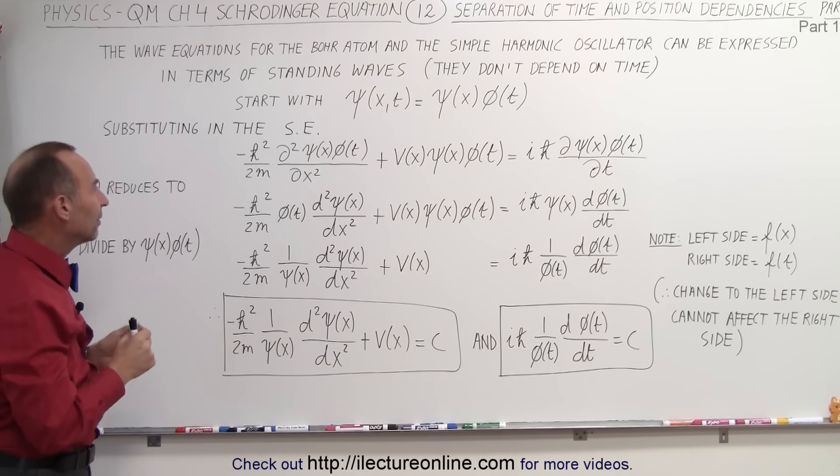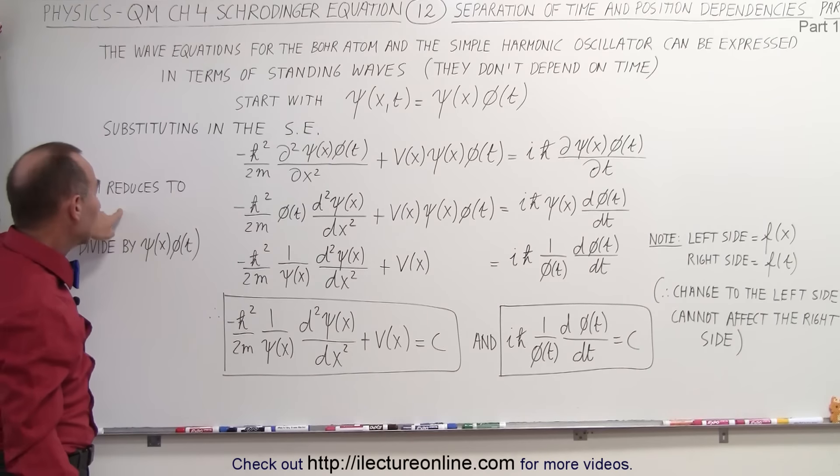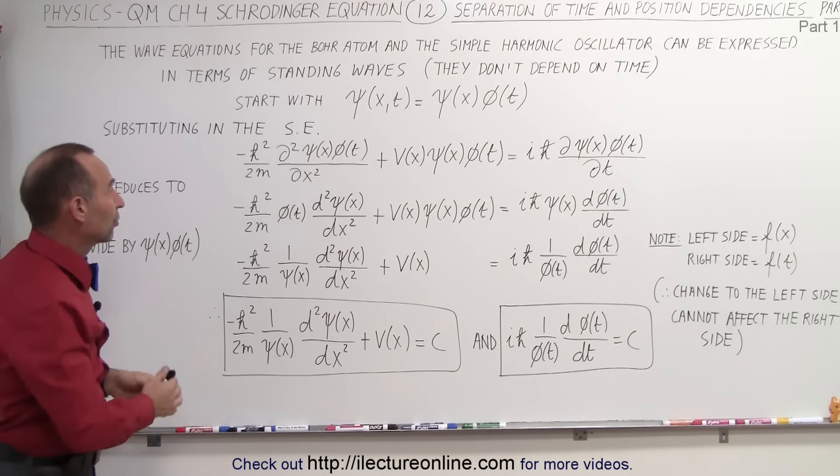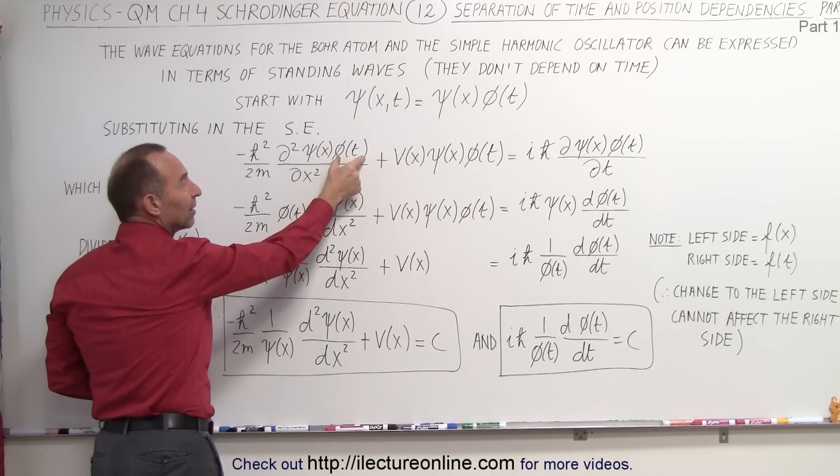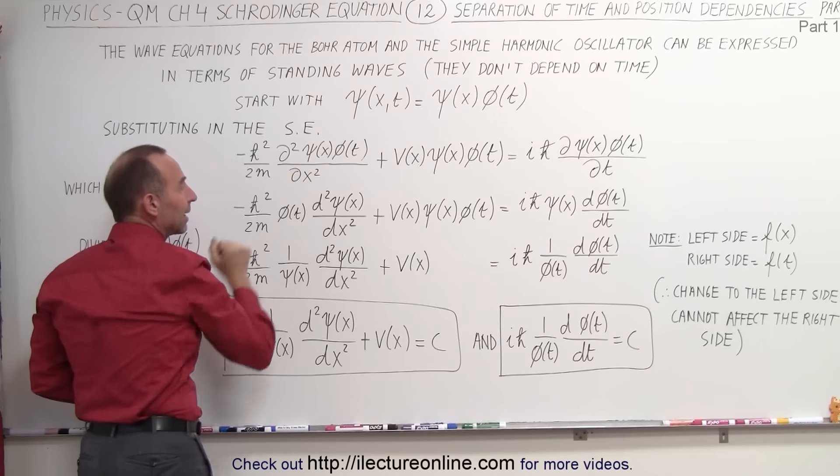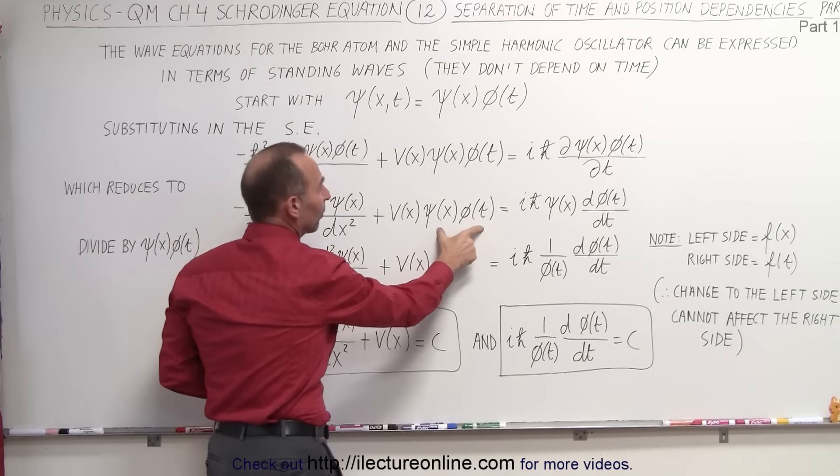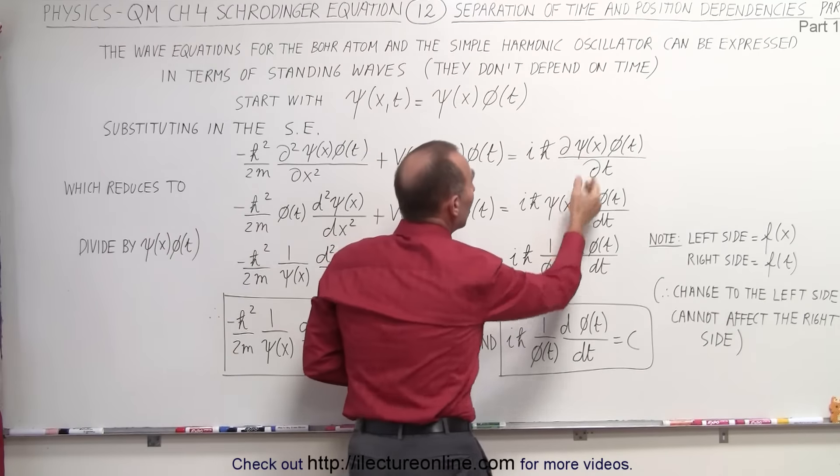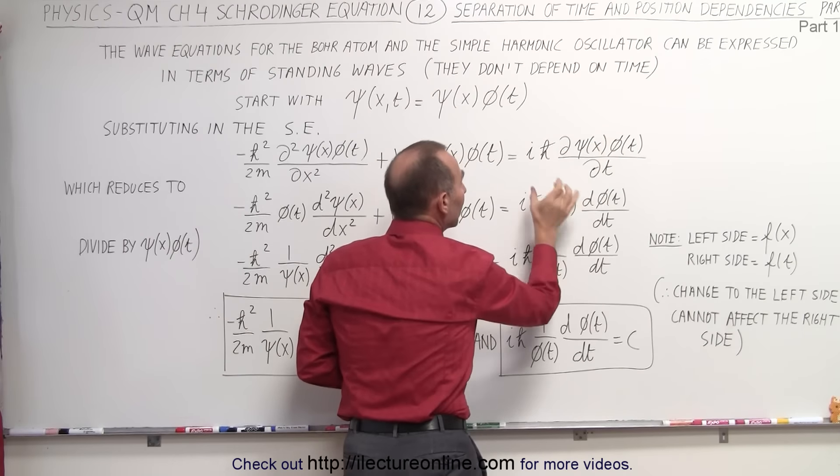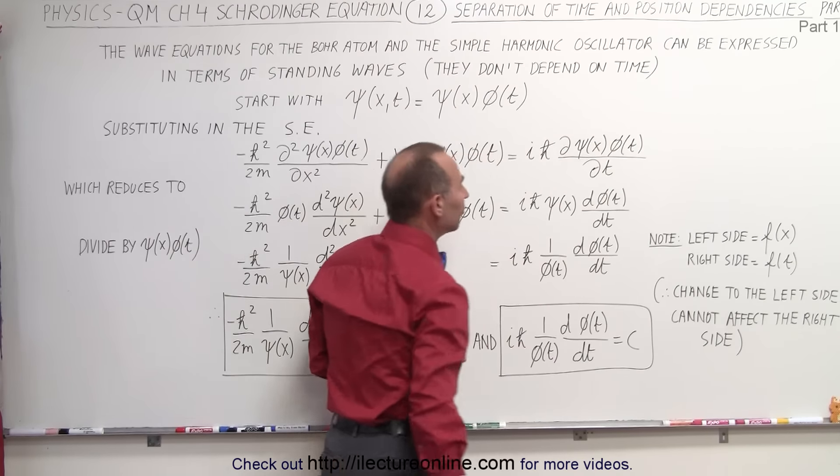If we do that, then we realize that this can be reduced to this. For example, if we're taking the partial derivative with respect to x, it's not going to affect this. This becomes a constant, it can be taken out. Here, we still write it as a product, and here, since we're taking the partial derivative with respect to time, we can take out the position-dependent portion and write it in front.